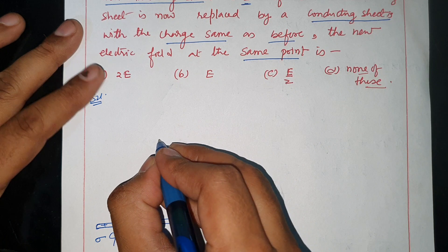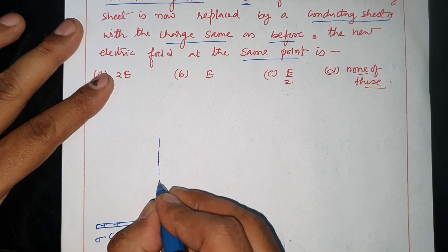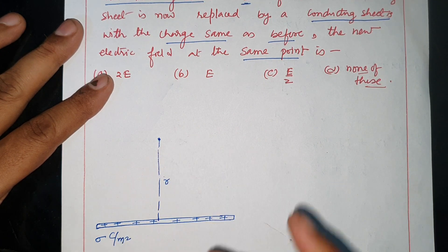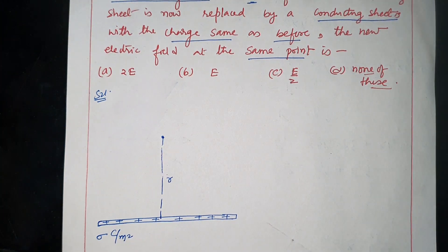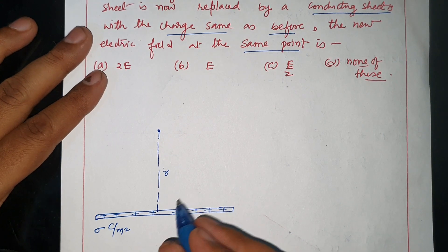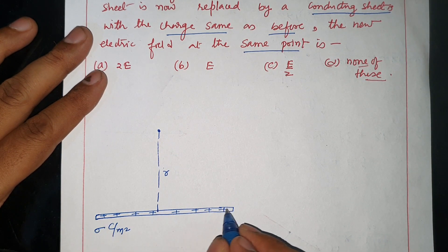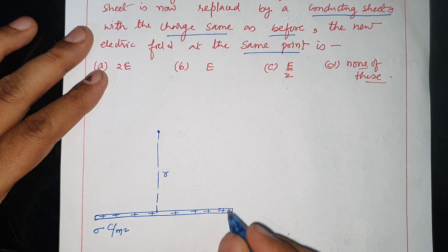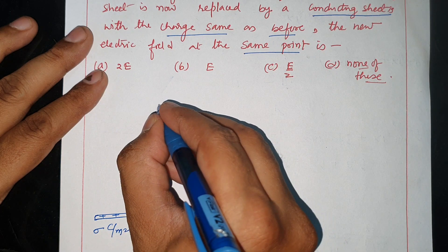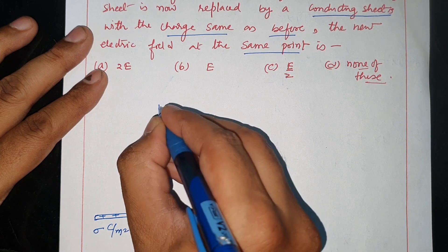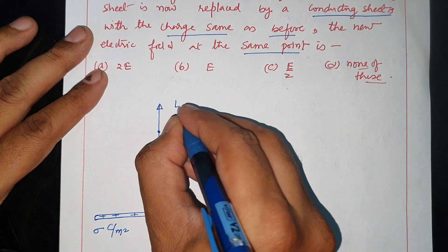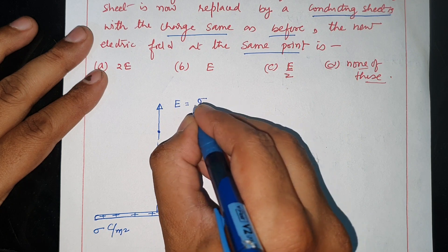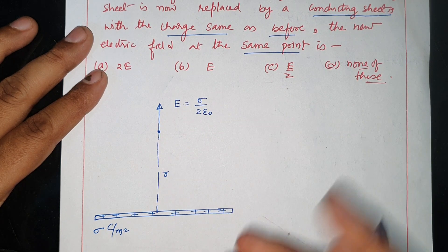For a non-conducting sheet, the electric field is perpendicular to the surface of the sheet and its magnitude equals σ divided by 2ε₀ (sigma upon 2 epsilon naught).